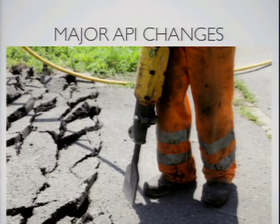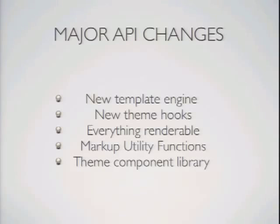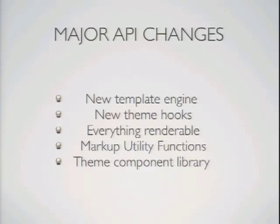To get all this, we need to make some API changes: a new template engine, new theme hooks, making everything renderable, and markup utility functions which are still evolving. We have people like Morton kicking the tires and seeing how this stuff actually works in practice. So we're trying to figure out as we go what tools are actually useful to themers. The markup utility functions and the theme component library fall under that category.